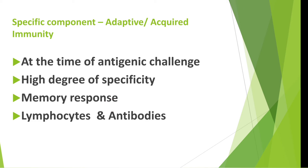The immune response to the second challenge occurs more quickly than that of the first and is also stronger and more effective. The major agents of adaptive immunity are the lymphocytes, the antibodies, and some molecules they produce. In general, most of the microorganisms encountered by healthy individuals are cleared within a few days by the defense mechanisms of the innate immune system before they activate the adaptive immune system.